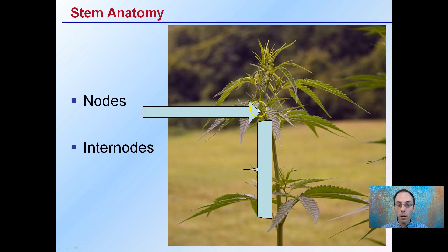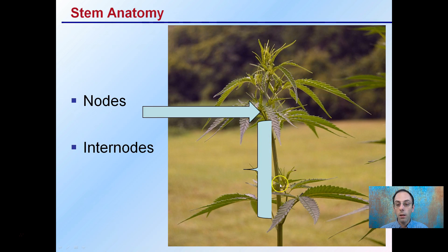Here's a quick stem anatomy. We have our nodes, which are the sites where our leaves and petioles attach, and then our internodes — the distance between those two nodes. Some growers talk about keeping short internodes, keeping the amount of stem between where leaves attach to the stem as short as possible. This can be important for a variety of reasons. Plants that have long internodes tend to be very wispy and can break easily.